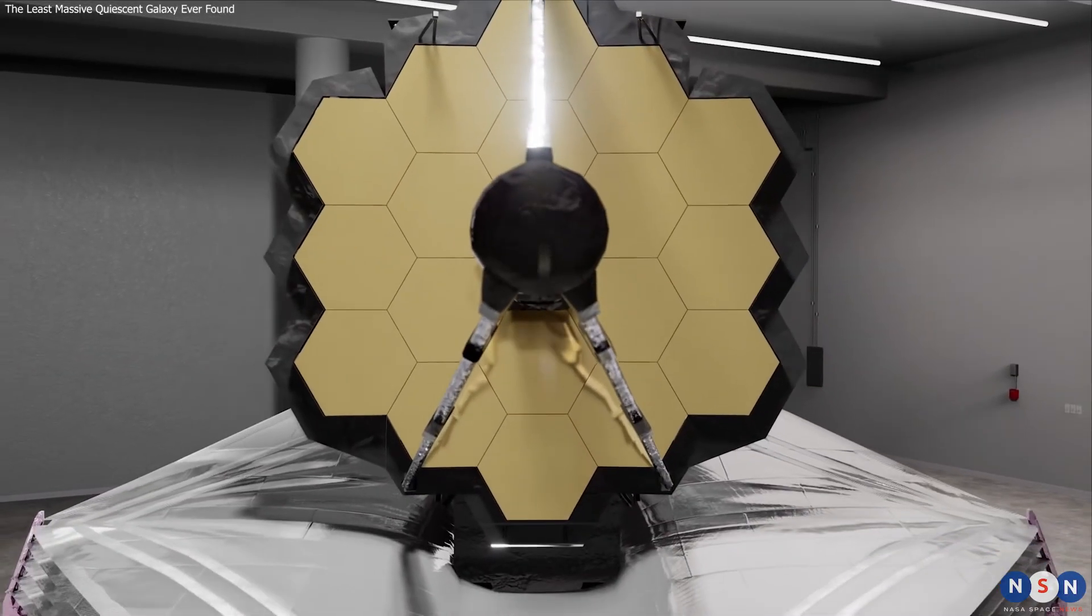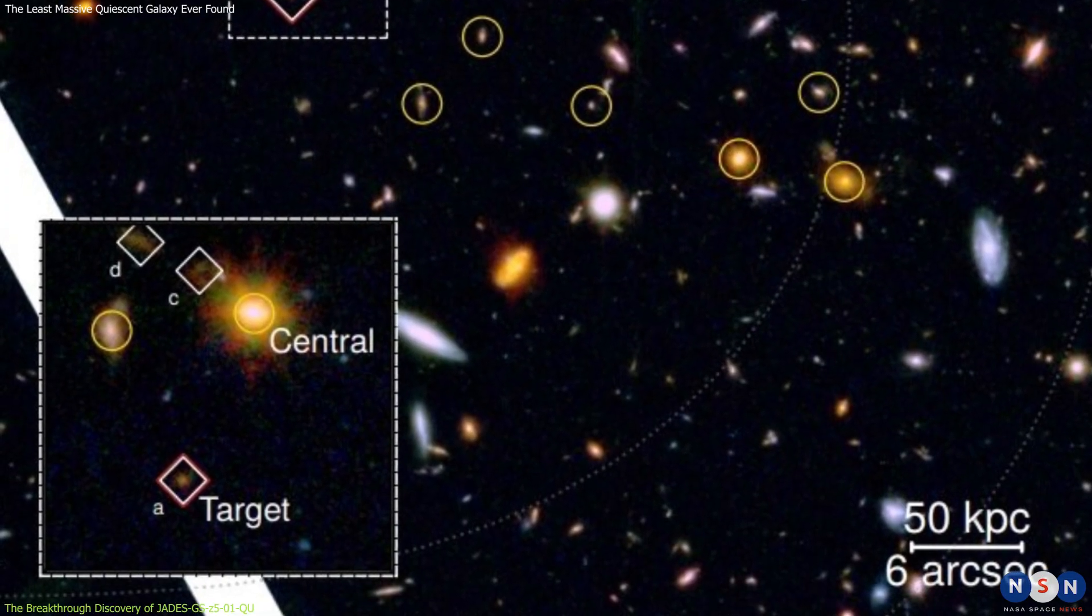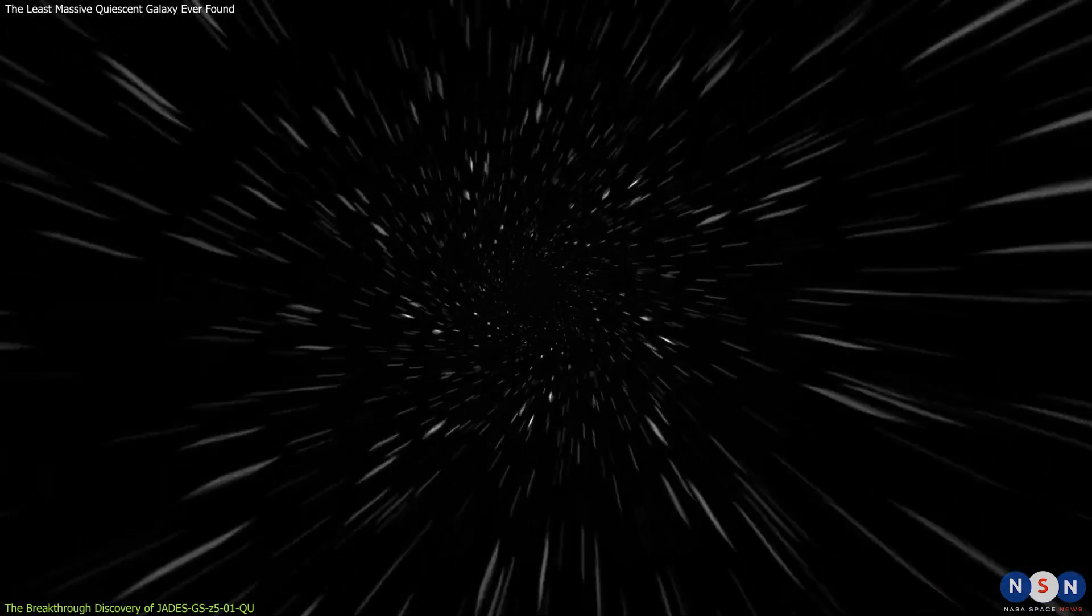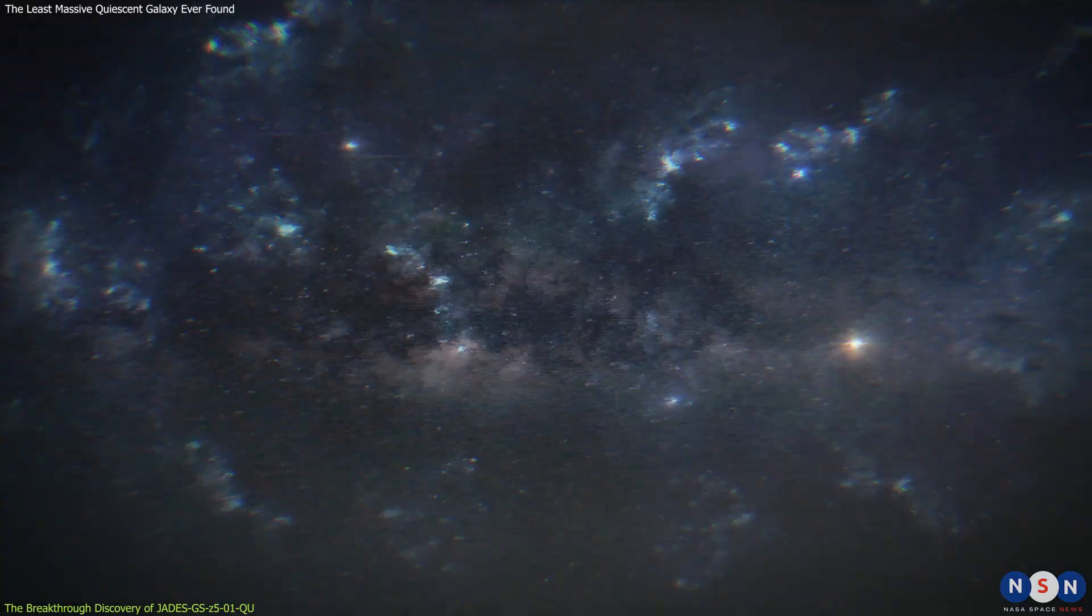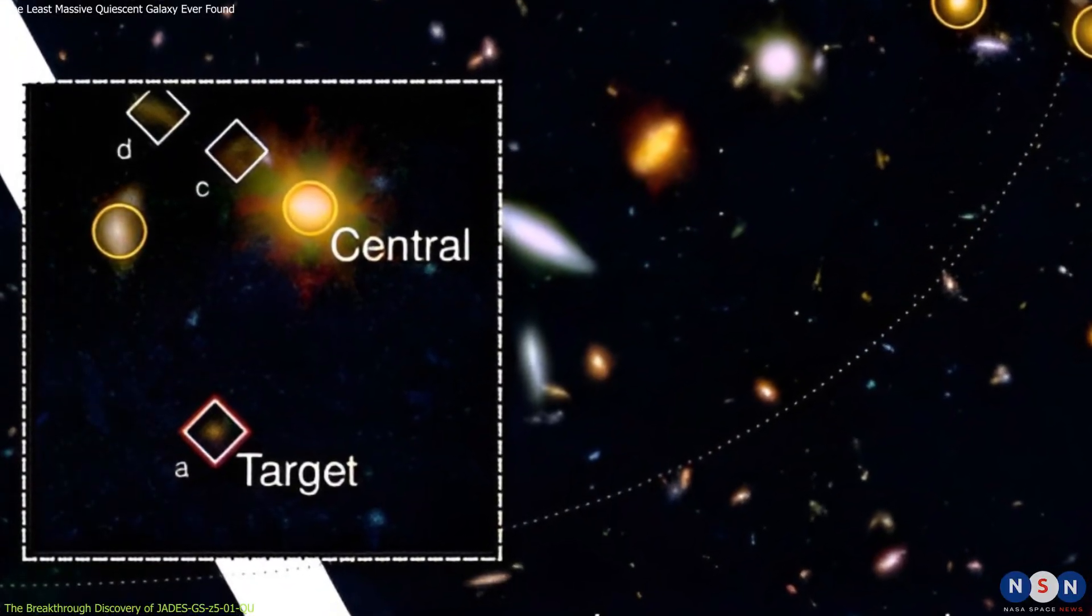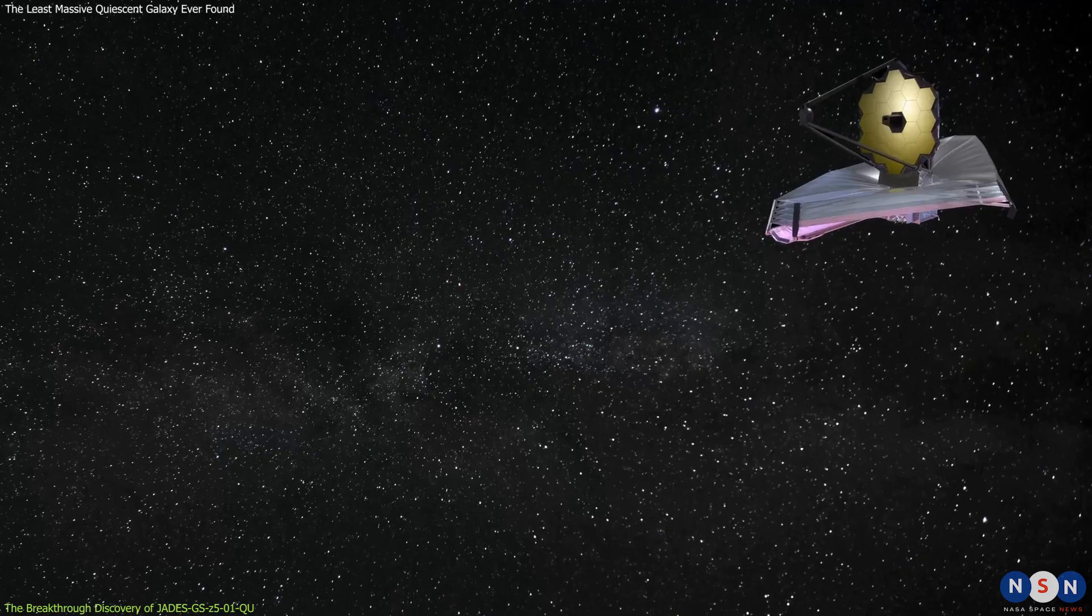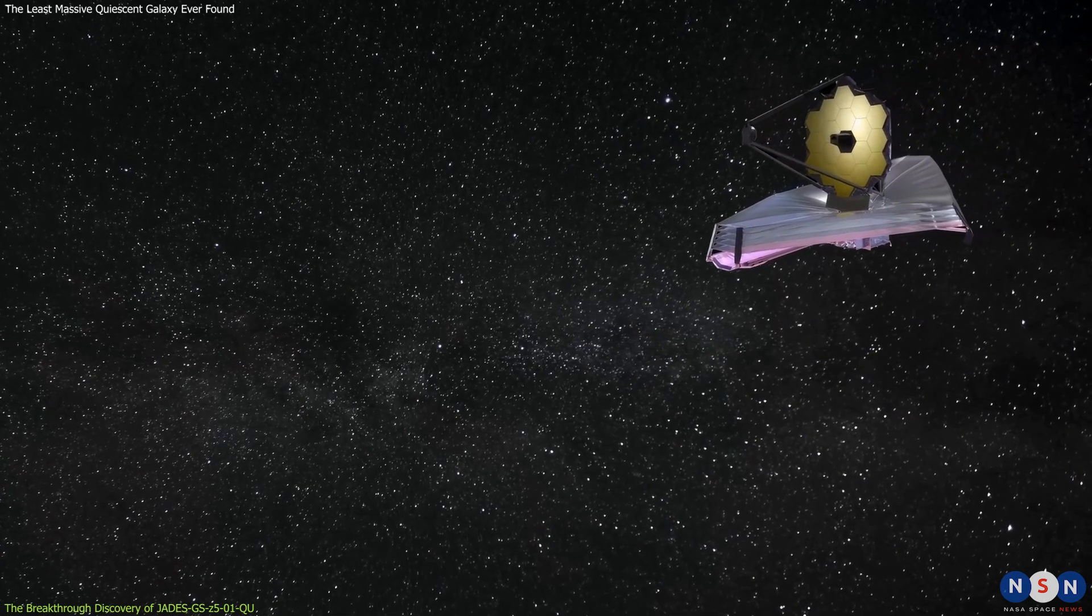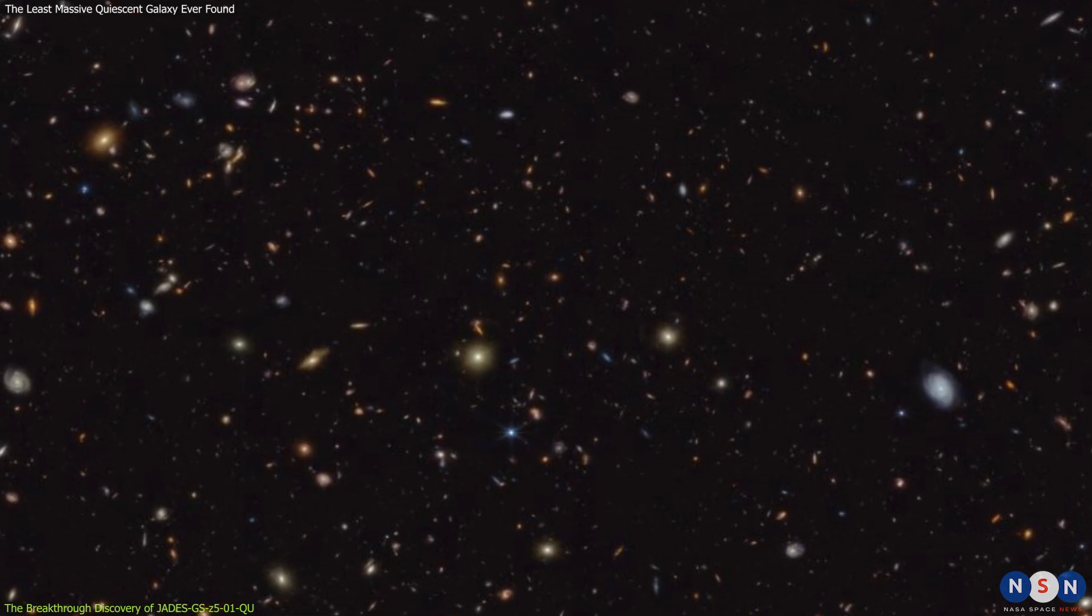Using James Webb Space Telescope, an international team of astronomers has discovered a new quiescent galaxy at a redshift of 2.34, which means it is about 11 billion light-years away from us, and we see it as it was when the universe was only 3 billion years old. The galaxy is named JADES-GSZ501QU, after the survey that detected it, the James Webb Advanced Deep Extragalactic Survey, or JADES, which is one of the first surveys conducted by Webb, covering two fields in the sky with deep infrared observations.